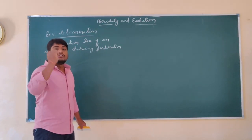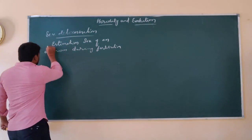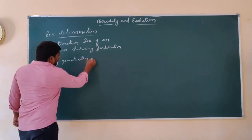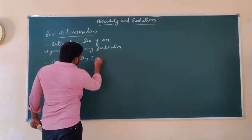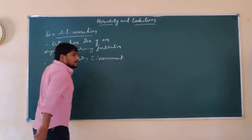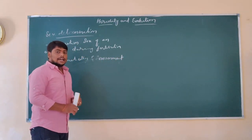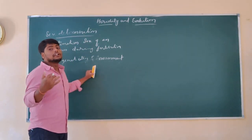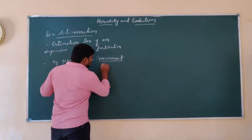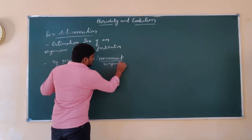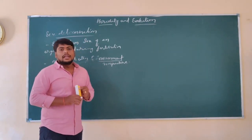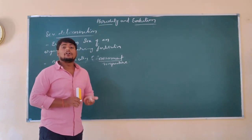This sex determination can be carried out genetically, as well as by environmental factors. The environment also plays a role in the discovery of the gender of an offspring. The main environmental factor is temperature — the temperature of the environment plays a basic key role in estimating or knowing the gender of an organism.